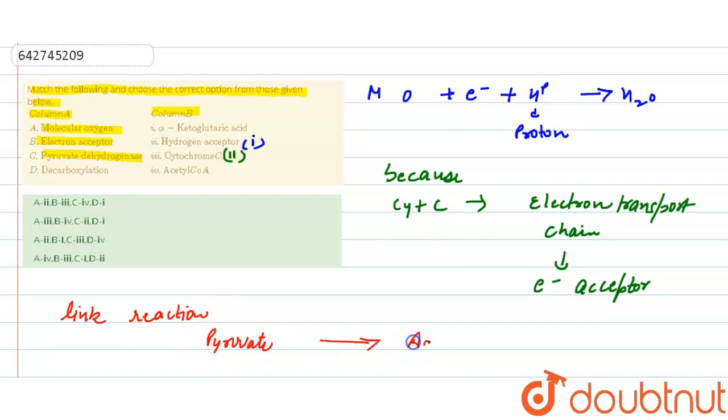...will convert into acetyl coenzyme A with the help of pyruvate dehydrogenase. So this is the link reaction. Pyruvate dehydrogenase is linked with acetyl coenzyme A. And last is the decarboxylation reaction.